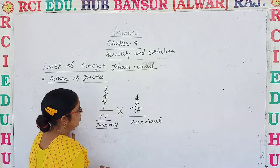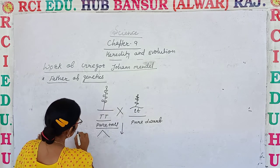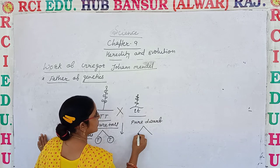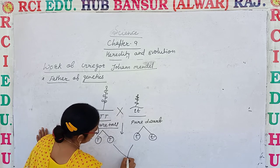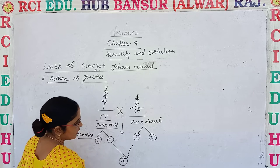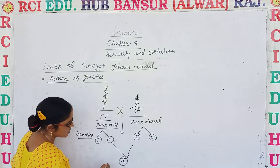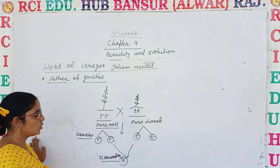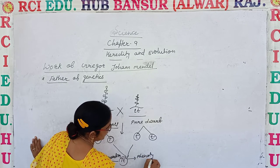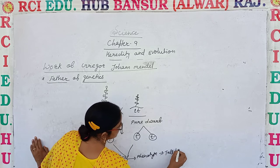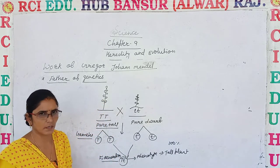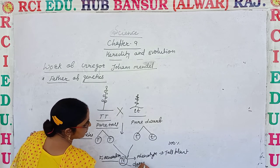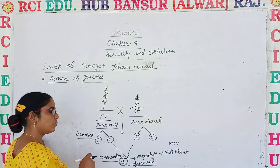When he crossed these two plants, here are two gametes: one is capital T and the other is capital T from the tall plant, and one is small t and the other is small t from the dwarf plant. Overall, we get the F1 progeny, which is capital T and small t. This is known as the F1 generation, or the first filial generation. Morphologically, the phenotype was tall plants — the ratio is 100%. Capital T is the dominant trait.